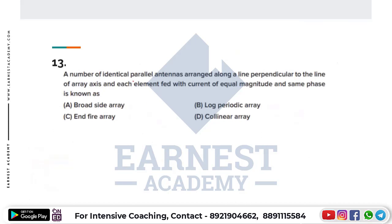13th question: a number of identical parallel antennas arranged along a line perpendicular to the array axis, each element fed with a current of equal magnitude and same phase. Each element has the same current and the same phase.